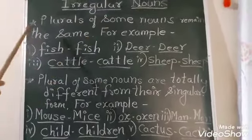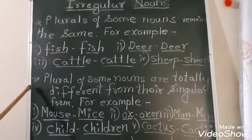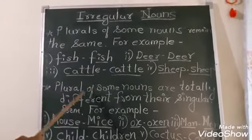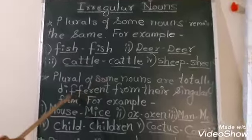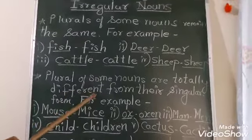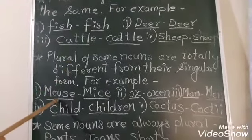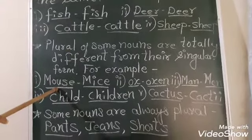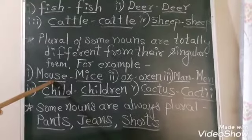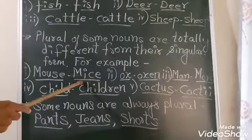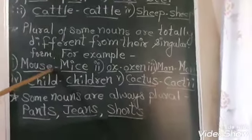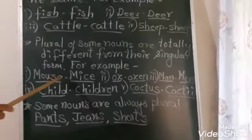Plurals of some nouns are totally different from their singular form. For example, mouse. If it is written here mouse, then the plural will be mice. We cannot add here as mouses. That is wrong.